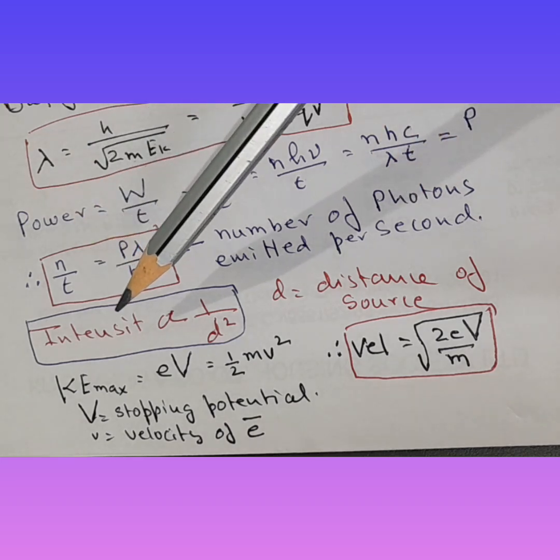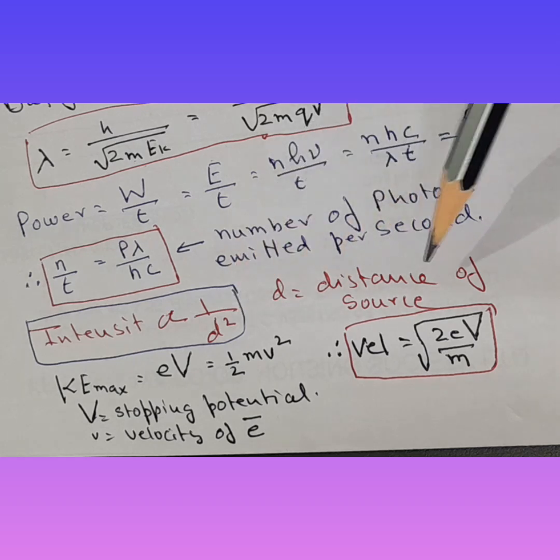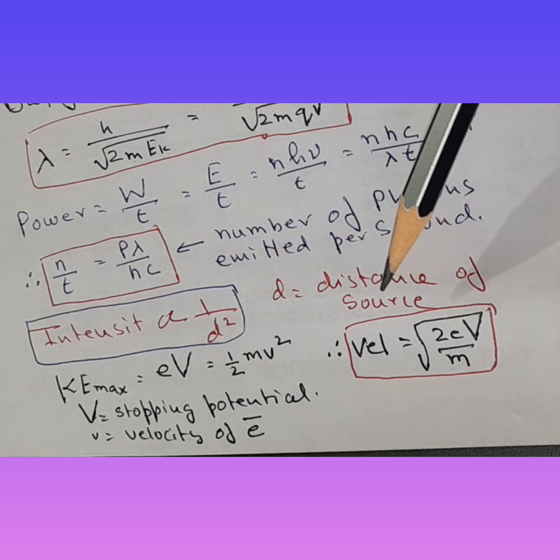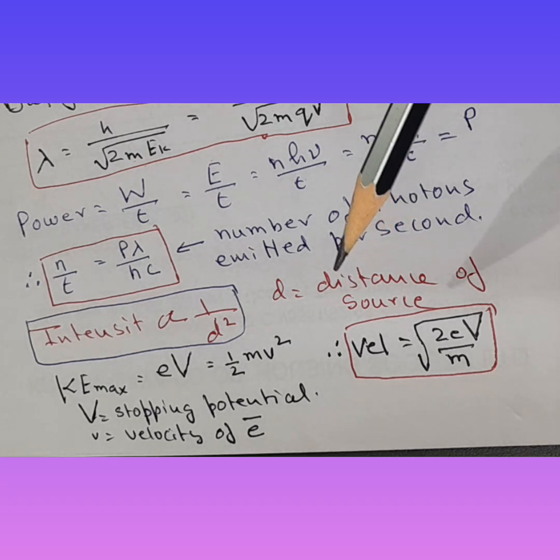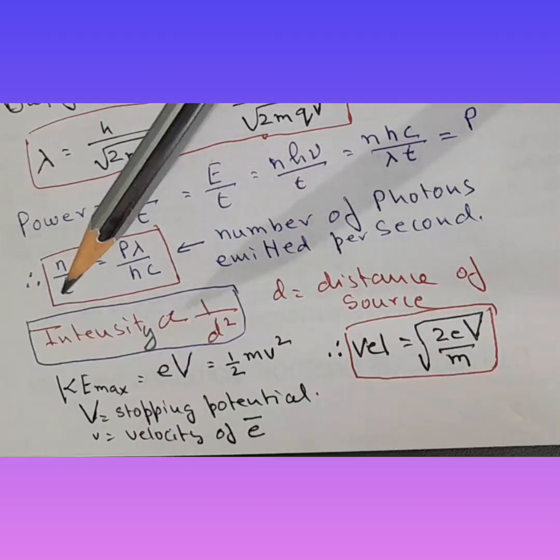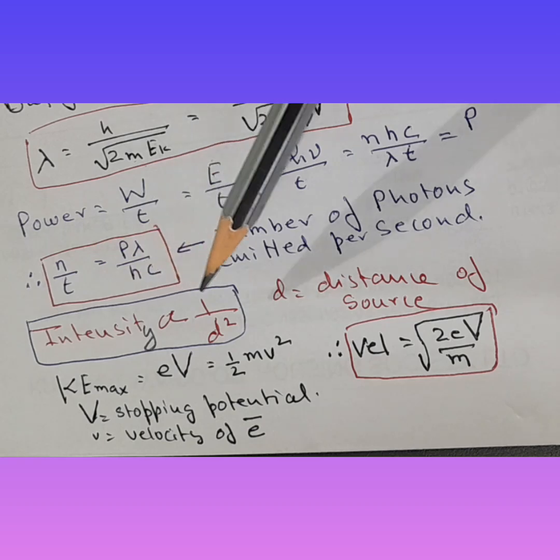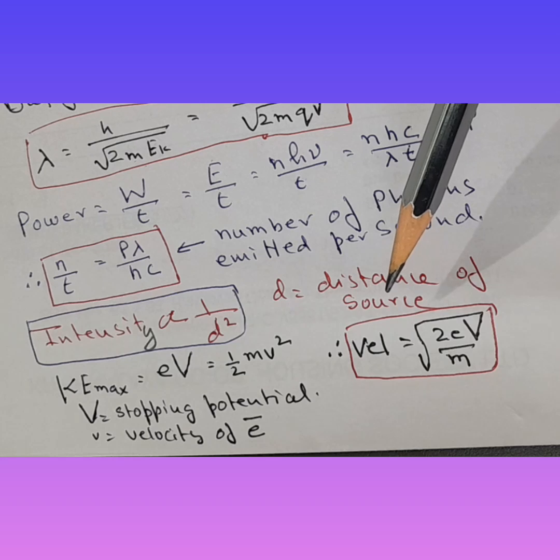Now again, another thing that you have got to keep in mind is intensity is inversely proportional to distance of source. Obviously, if the source is kept very close to the target, then obviously the intensity would be more. Whereas if it is kept far away from target, then intensity is inversely proportional to distance square. d is distance of source from target.